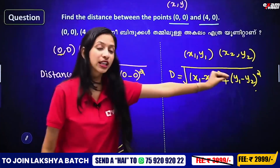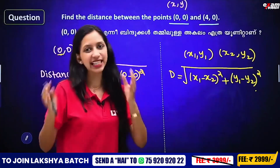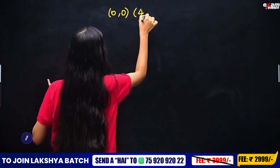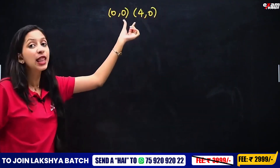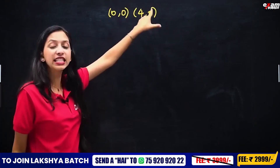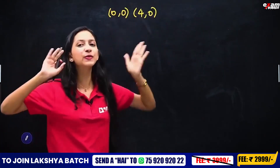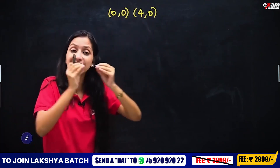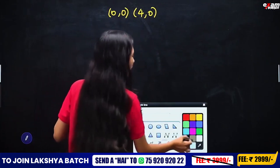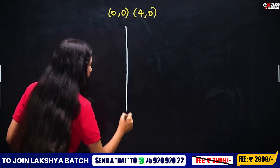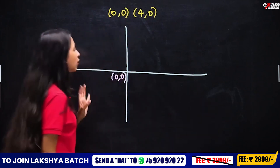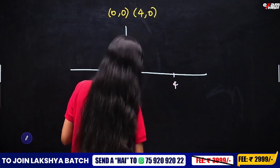We can see the distance is 4 units. The points are (0, 0) and (4, 0). The point (0, 0) is the origin. We can look at the graph — the origin is at (0, 0) and point (4, 0) is 4 units along the x-axis. The distance between them along the x-axis is clearly 4 units.